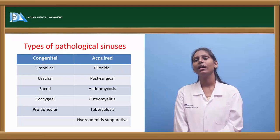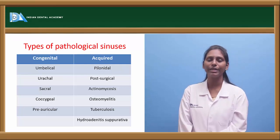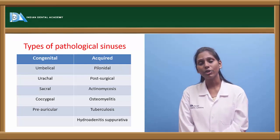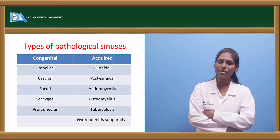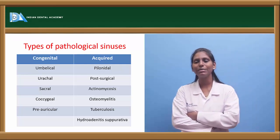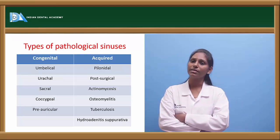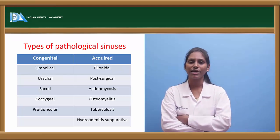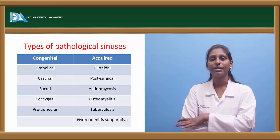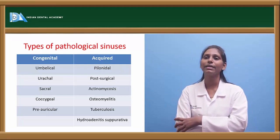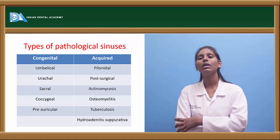Coming to acquired sinuses — we have pilonidal sinus, post-surgical sinuses, actinomycosis, osteomyelitic sinuses, tuberculosis sinus, and hidradenitis suppurativa. In pilonidal sinus, it is usually seen in the natal cleft where hair shafts migrate toward the natal cleft, leading to recurrent infections and discharges resulting in a pilonidal sinus opening.